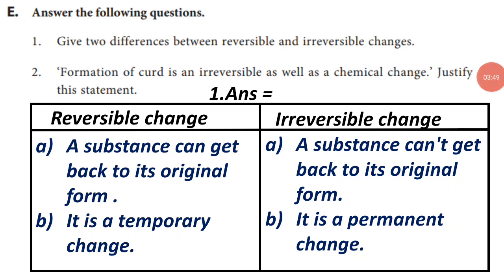E. Answer the following questions. First, give two differences between reversible and irreversible change. Answer: A. Reversible change — a substance can get back to its original form; it is a temporary change. B. Irreversible change — a substance cannot get back to its original form; it is a permanent change.